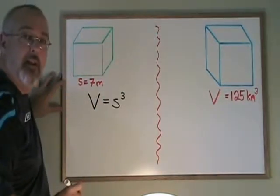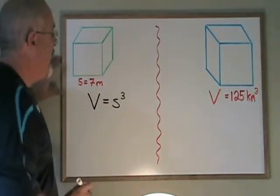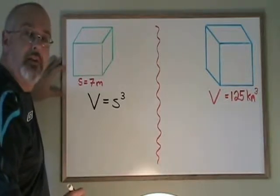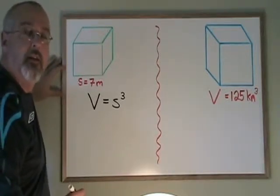S is the side length. It means that the volume is equal to the side length times the side length times the side length.